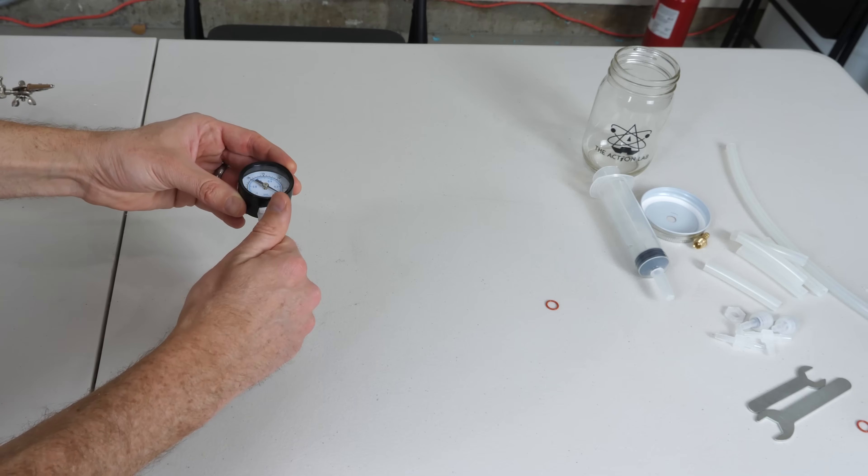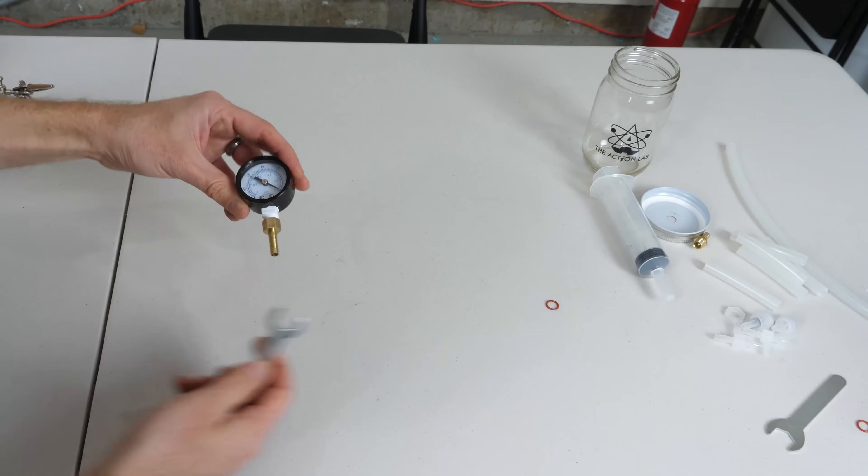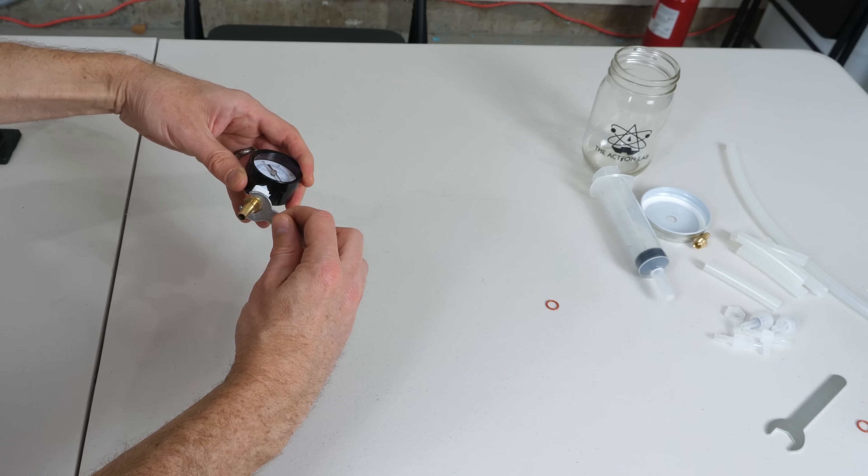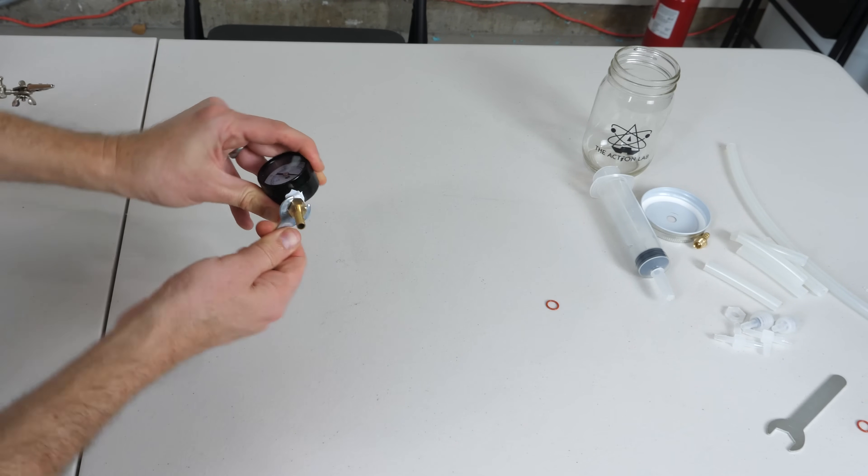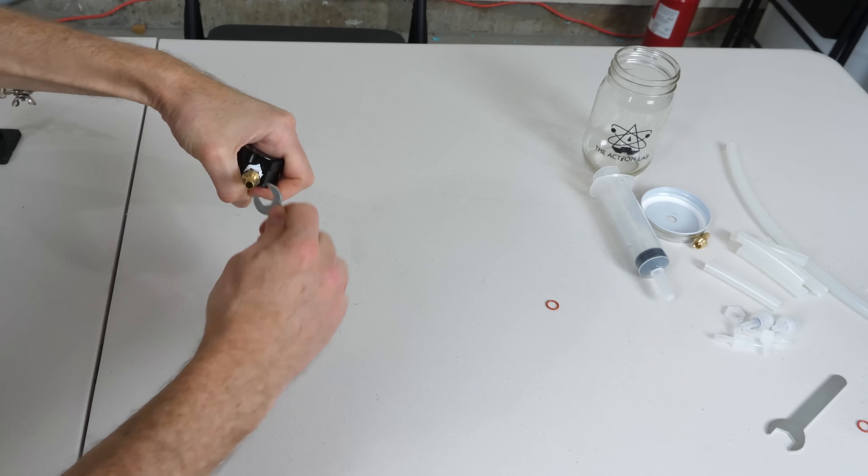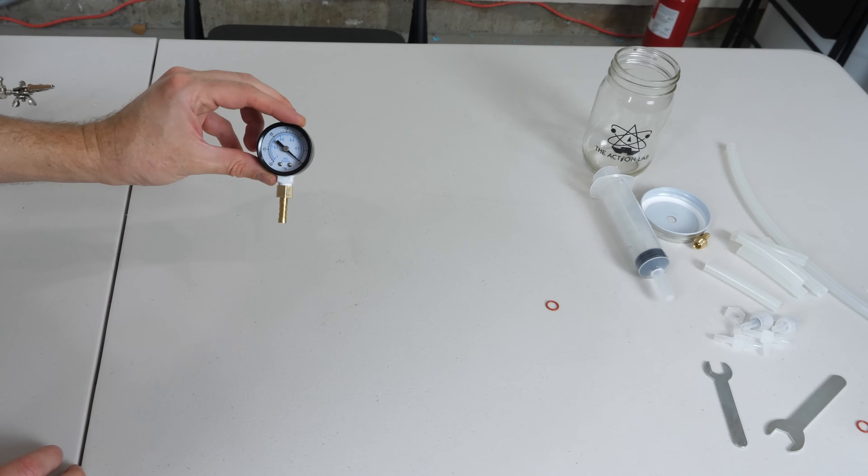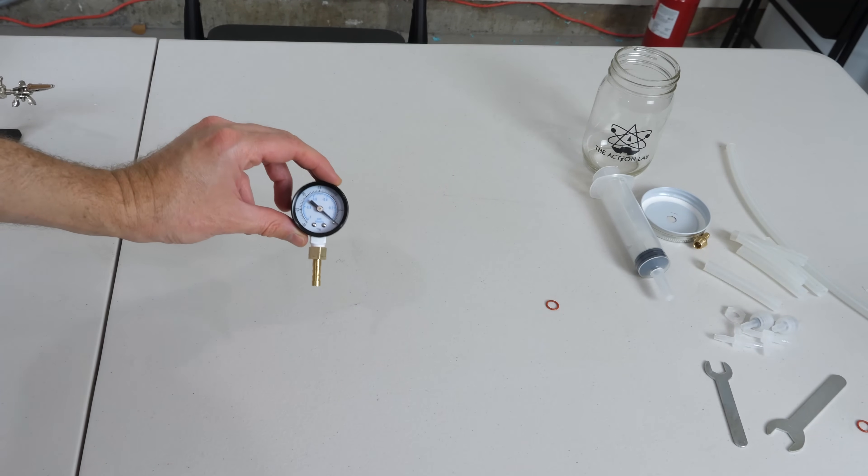So we turn it this way and just tighten it as much as you can get with your hand. And then you can use the included wrench here and tighten it the rest of the way. So now this should be able to hold a vacuum.